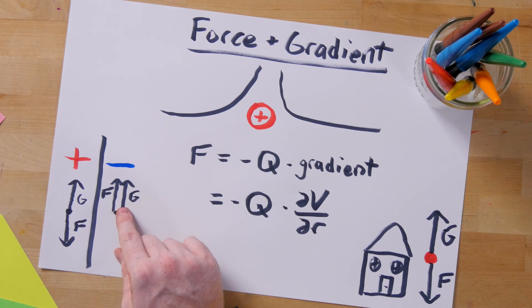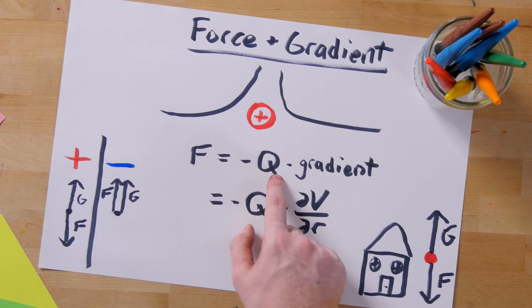Be careful though. A force on a negative charge will point in the same direction of the gradient because the negative signs will cancel.